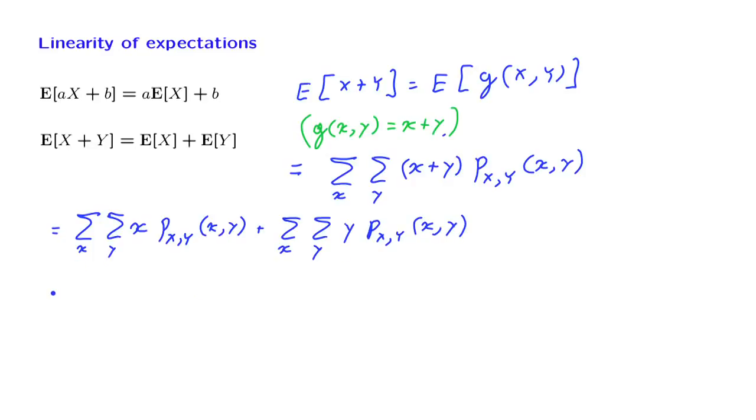Now, if we look at this double summation, look at the inner sum. It's a sum over y's. While we're adding over y's, the value of x remains fixed. So x is a constant as far as this sum is concerned. So x can be pulled outside this summation.